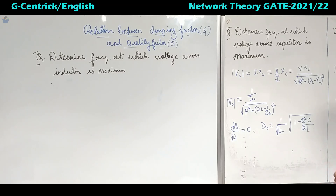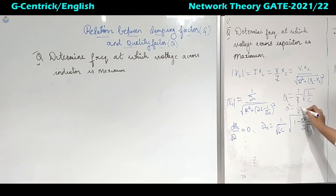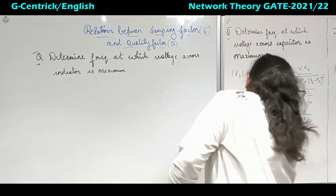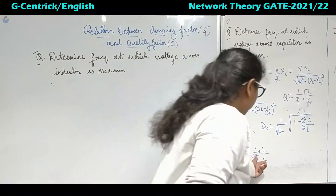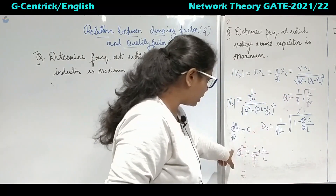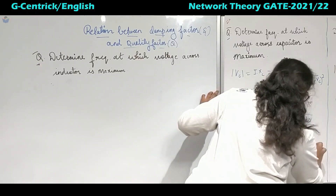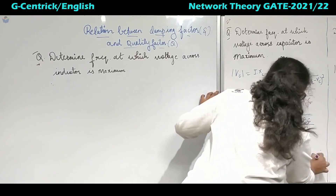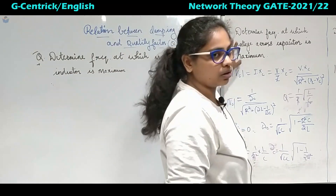Now, you have already seen that the quality factor Q is related to R, L, and C. It is 1 by R times root of L/C. If you square this, Q squared equals 1 over R squared times L by C. Comparing the two equations, R squared C over 2L is the inverse of Q squared. So we can rewrite omega C as 1 by root LC, times under root of (1 minus 1 upon 2Q squared). This is the maximum frequency across the capacitor.